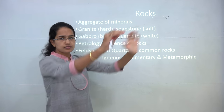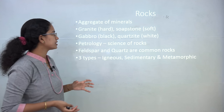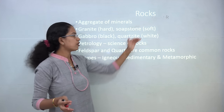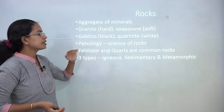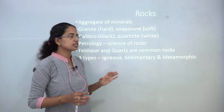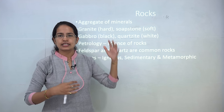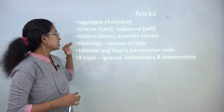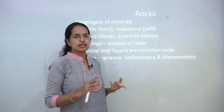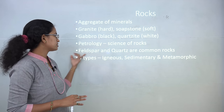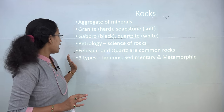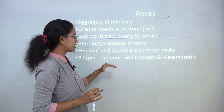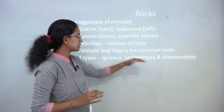The next topic is rocks. Rocks are aggregates of minerals and can be as soft as soapstone or as hard as granite. They vary in color from white, the color of quartzite, to black, the color of gabbro. The science of studying rocks is known as petrology, under which you study various physical characteristics, luster, color, specific gravity, and so on. The most commonly found minerals in rocks are feldspar and quartz — feldspar accounts for nearly 50% of the Earth's crust. The three primary types of rocks are igneous, sedimentary, and metamorphic.